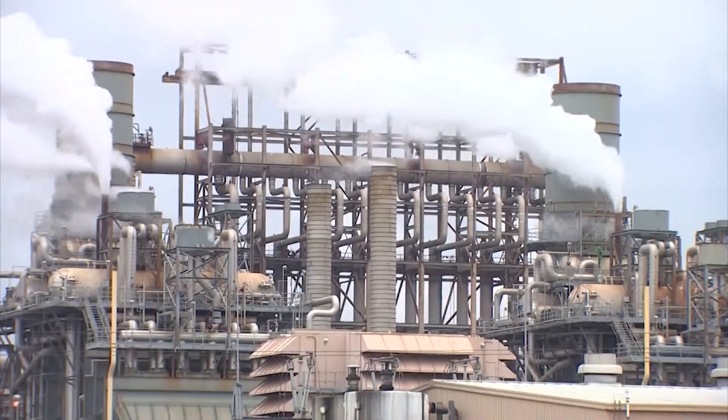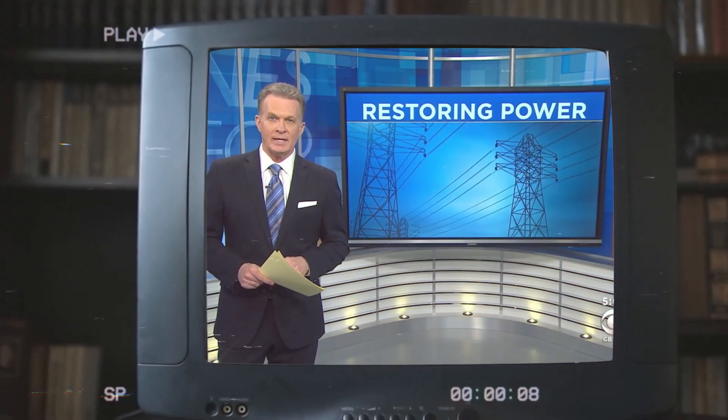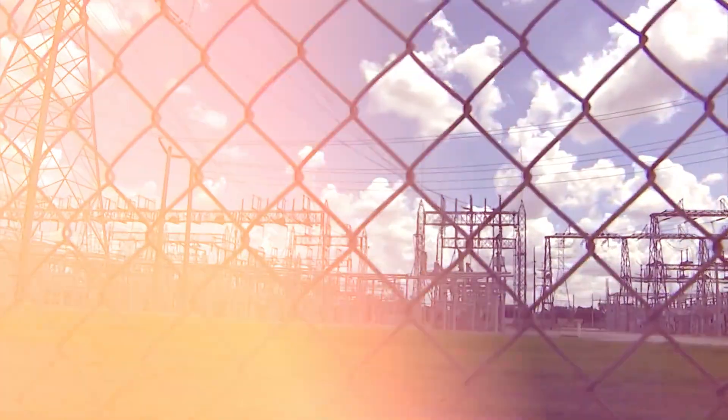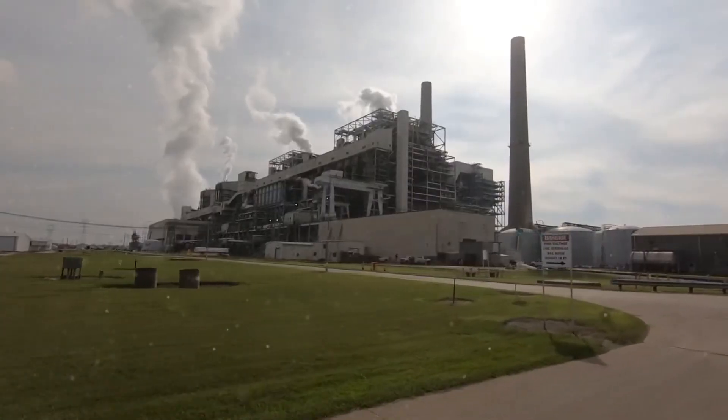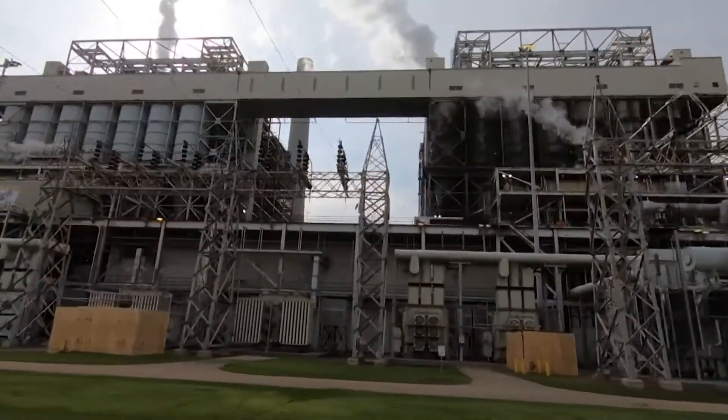While equipment failures like this are common in large-scale power grids, this particular incident was significant. The grid, designed with redundancy to handle such faults, typically isolates the problem using breakers, with spare capacity from other parts of the grid taking over to prevent widespread outages.